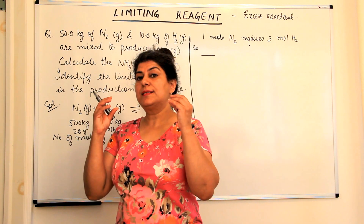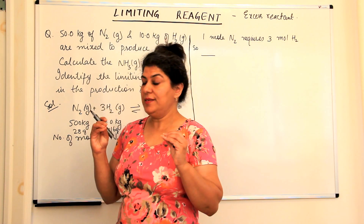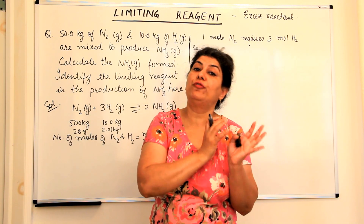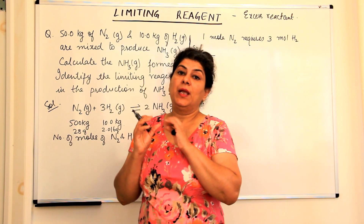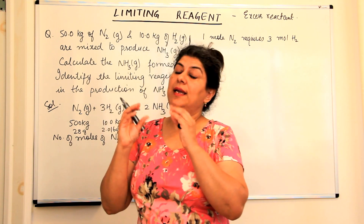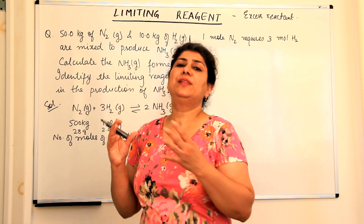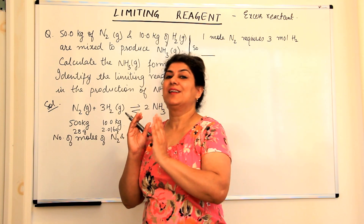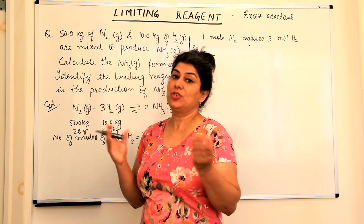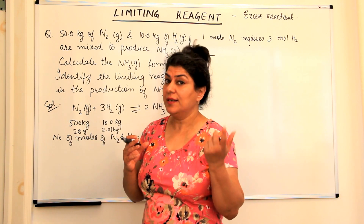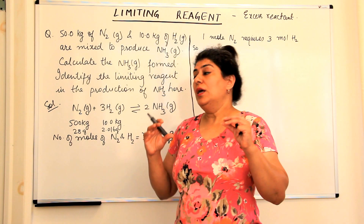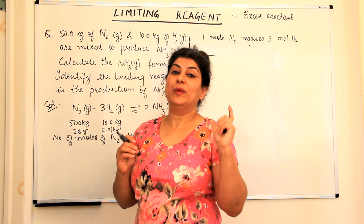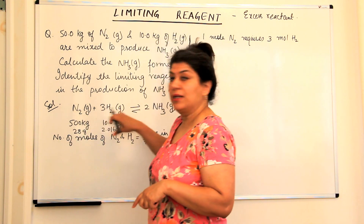We have been given certain masses of the reactants and we would like to know how much of the product would be formed from these reactants, and whether these reactants are in the required ratio or if one is in excess or short — acting as a limiting reagent. To solve such a problem, the first step is to write the balanced chemical equation.